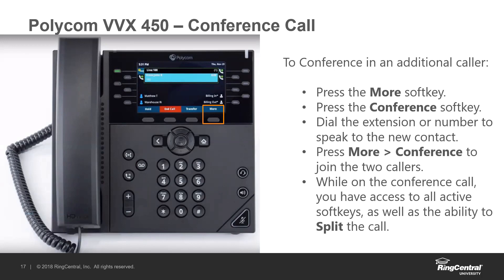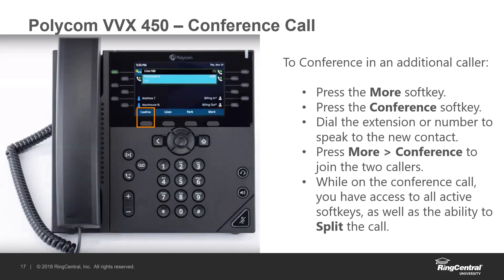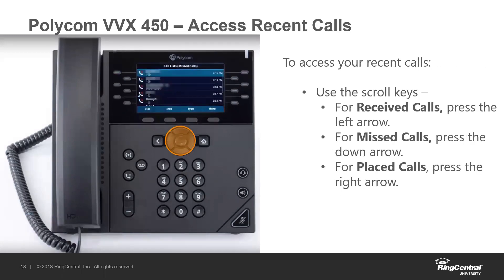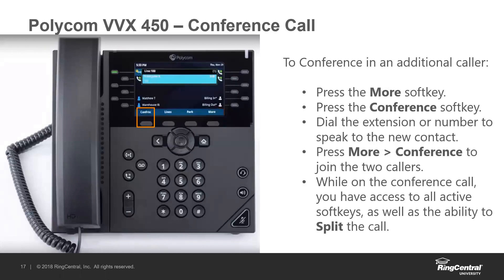To do a conference call, press 'more' on the far right, and this screen will show 'conference' on the left. This works the same as transfer — once you press conference, your caller goes on hold automatically. Dial the extension or phone number, your phone rings out, wait until that second person answers, then press 'more' and 'conference' again to merge everybody together. Once on an active conference call, you can also split that call — the button changes from 'conference' to 'split,' allowing you to split it back into two separate calls.